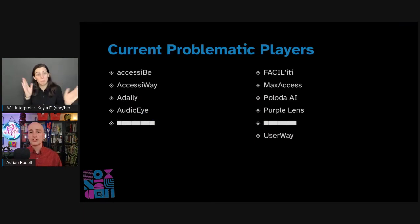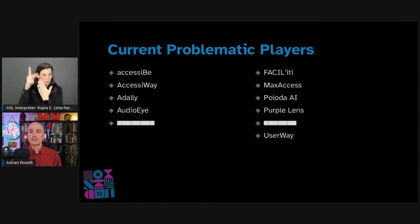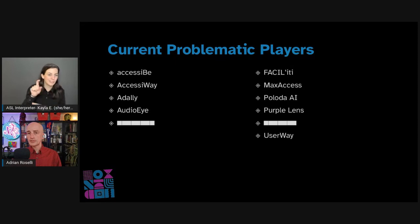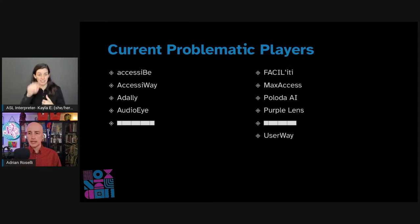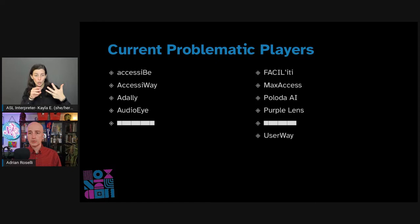The current list of overlay vendors is not necessarily filling these gaps. They are capitalizing on a general lack of understanding of people and needs, focusing on selling quick fixes to businesses instead. These companies include Accessibee, AccessiWay, AdAli, AudioEye, Redacted, Facility, MaxAccess, Polota AI, PurpleLens, Redacted, and UserWay. There are also vendors that white-label some of these products.